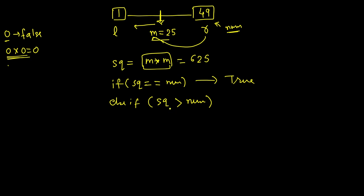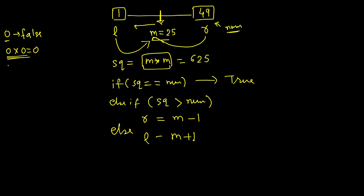Since mid's square is already more than num, all values larger than mid will also have squares larger than num, so we set right to mid minus 1. In the third case, if square is less than num, any value less than mid will also be less, so we search strictly in the right part and set left to mid plus 1.